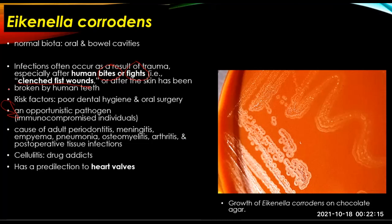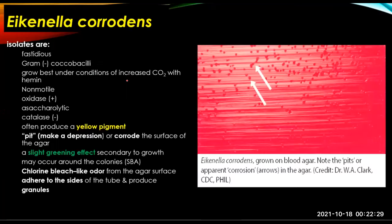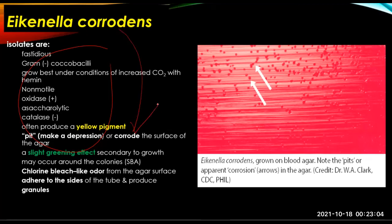This shows growth of Eikenella corrodens on chocolate agar. A common board exam question: from a human bite wound, the organism in question could be Eikenella corrodens. Isolates are fastidious, gram-negative coccobacilli that grow best under conditions of increased CO2 with humidity. They are non-motile, oxidase positive, and asaccharolytic. They are catalase negative and often produce a yellow pigment. About 45% of E. corrodens isolates pit — make a depression or corrode — the surface of the agar, hence the name 'corrodens.'